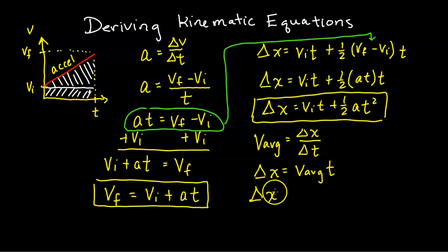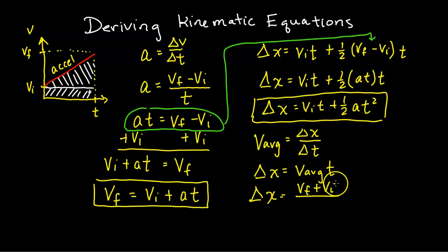Next, I'll substitute for v_average using the equation: v_average equals (v_final plus v_initial) divided by 2. This works when acceleration is constant — it's like finding the average of two numbers by adding them and dividing by 2. This only holds for constant acceleration, which is an important assumption for these kinematic equations.